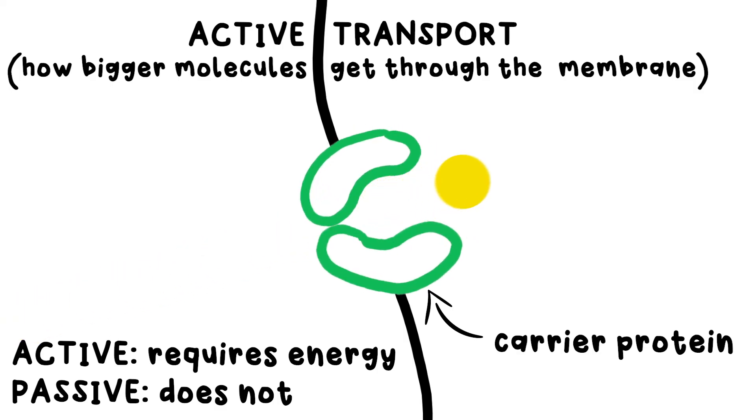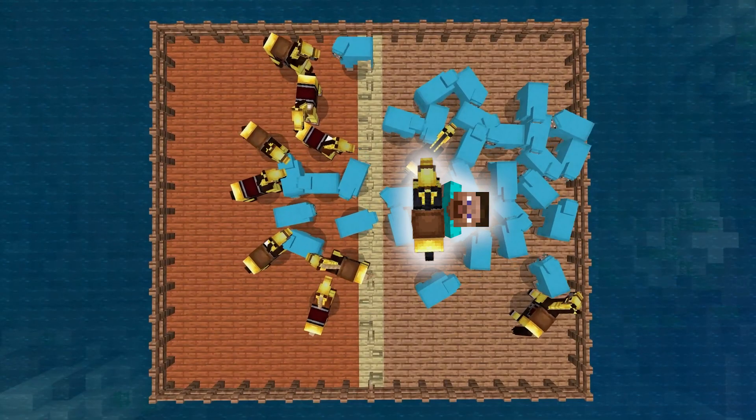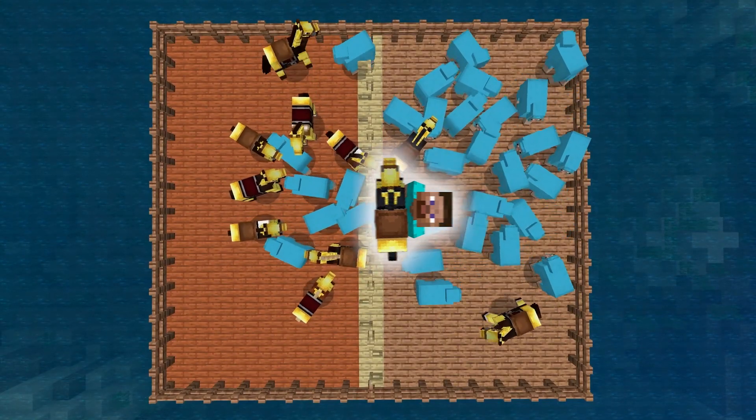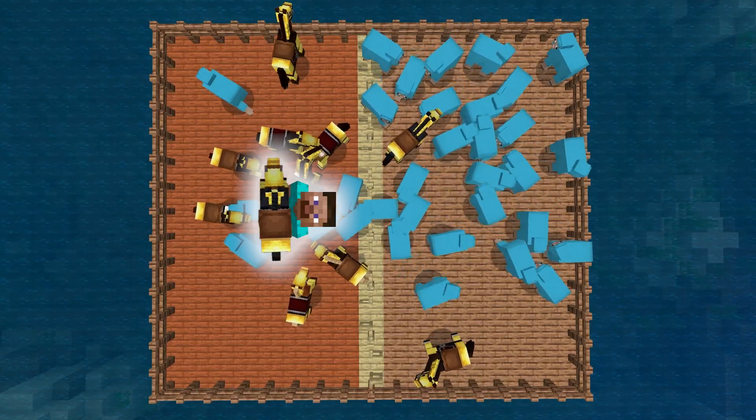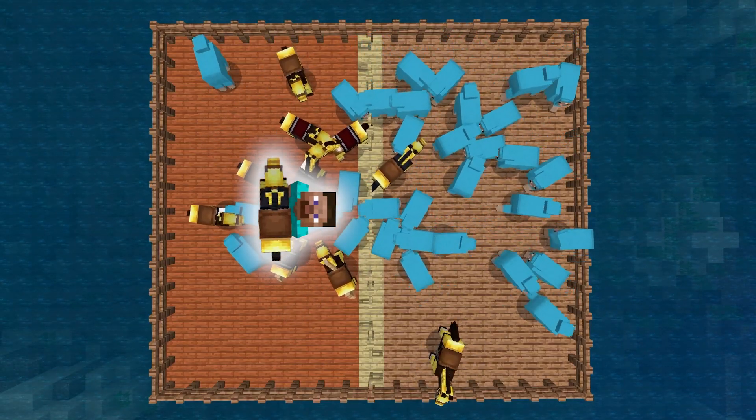It's called active transport because it requires energy to happen, unlike diffusion and osmosis, which we say are passive. They just happen of their own accord. They don't need energy. Because it's active, it can move particles up or against the concentration gradient. That would be like me picking up a horse and forcing him over to the other side, where there's already a load of them, a high concentration. It's like pushing a ball back up a hill. It takes energy.